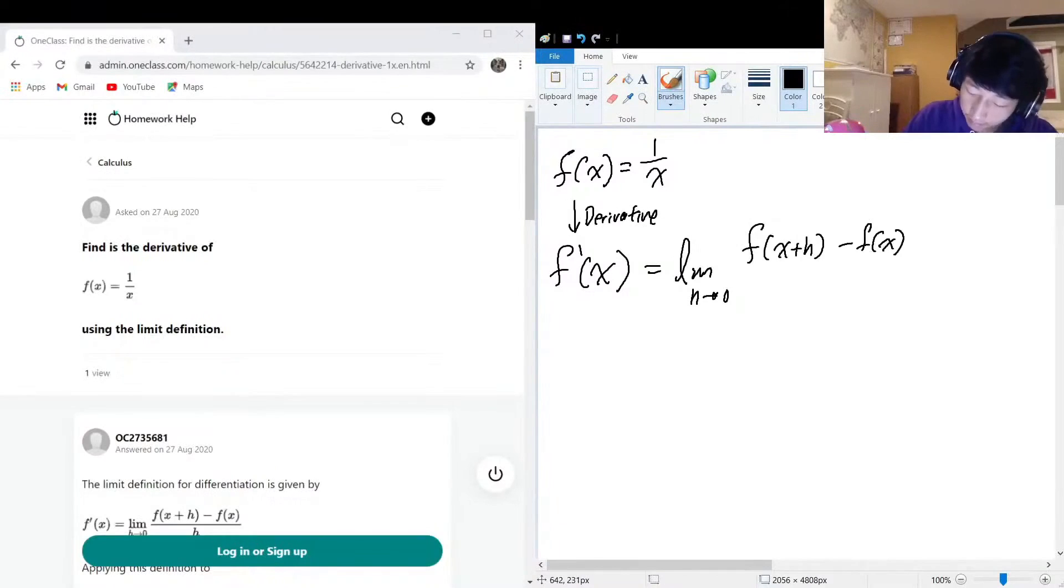minus f(x) just on its own, all divided by h. And you can check out other places on OneClass if you want a more detailed breakdown of where this equation comes from. Okay, so let's sub in f(x) is one over x and let's see what we get.